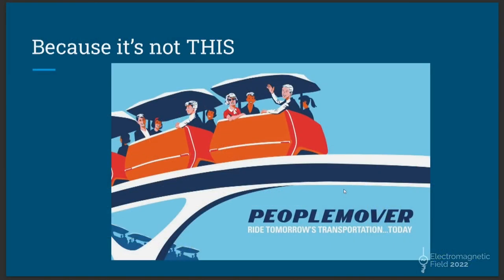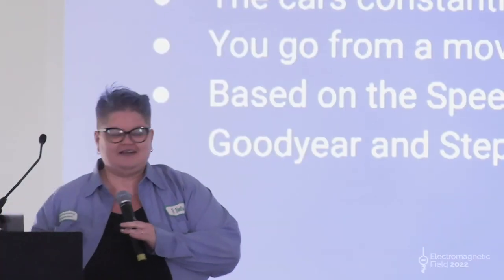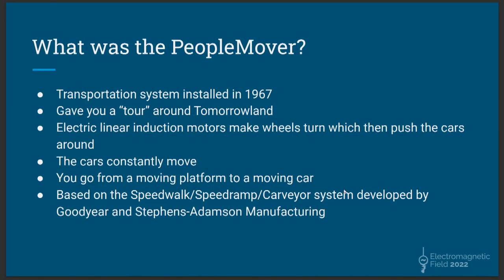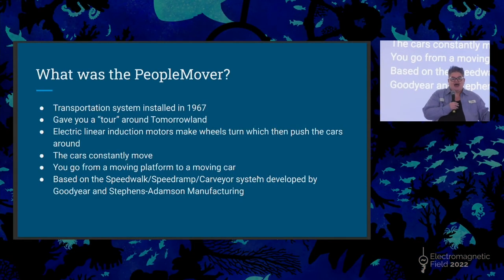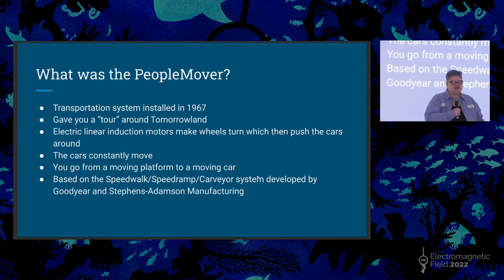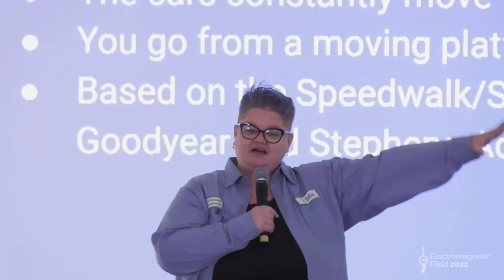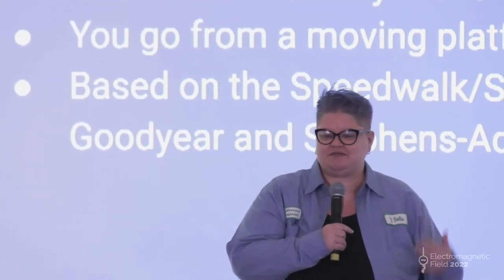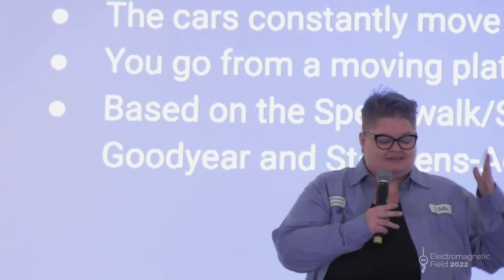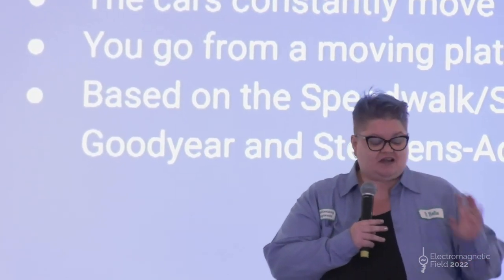And the reason why it sucks the most is because it is not the People Mover. The People Mover was a transportation system installed in 1967 — 67. It gave you a tour around Tomorrowland at Disneyland. It had linear induction motors that make the tires turn, which push the cars around. The cars constantly move — there's no traffic because they're still going all the time. You go from a moving platform to a moving car, so you don't even have to stop the cars at any time to let people on and off.